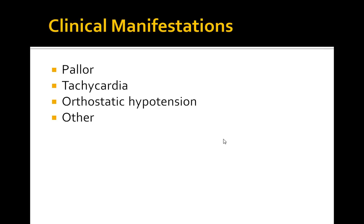In women, it's hematocrit less than 36% and hemoglobin less than 12. Clinical manifestations include things like fatigue, exertional dyspnea, and angina if the patient has CAD — all due to decreased oxygen delivery. Patients also have signs of pallor, especially in the mucous membranes and palmar creases.